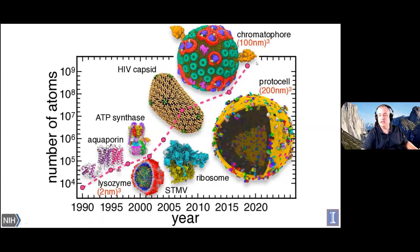The state of the art today includes large viruses such as an HIV capsid—the COVID virus is another several times larger—large photosynthetic organelles, and we're now getting into the regime where it is just beginning to become possible to simulate prototypical cells: the minimum-sized life forms that can exist on their own.